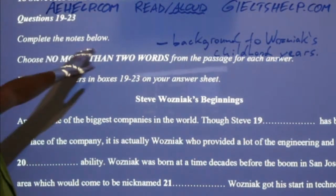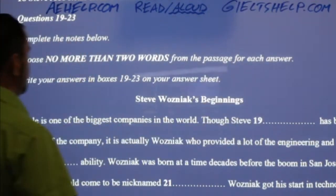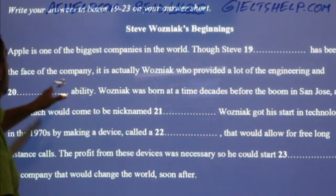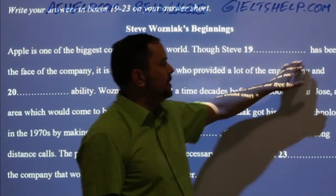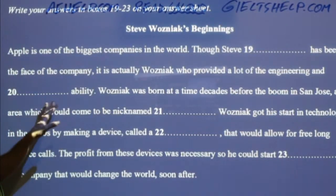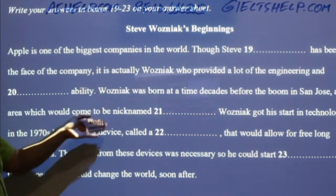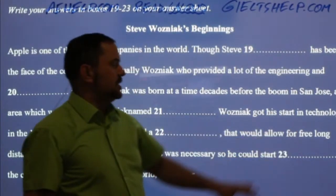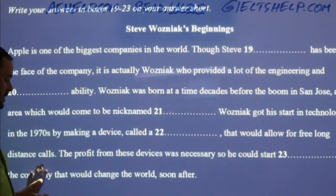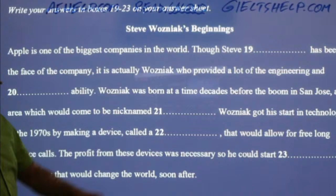Here we also have a sentence completion section. Complete the notes below: Steve Wozniak's beginnings. 'Apple is one of the biggest companies in the world. Though Steve [something] has been the face of the company, it is actually Wozniak who provided a lot of the engineering and [something] ability. Wozniak was born decades before the boom in San Jose, an area which would come to be nicknamed [something]. Wozniak got his start in technology in the 1970s by making a device called [something] that would allow for free long distance calls. The profit from these devices was necessary so he could start [something], the company that would change the world.'